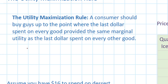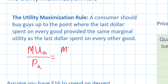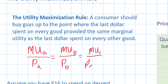There's a simple way of calculating this. We can say that the marginal utility of good A divided by the price of good A should equal the marginal utility of good B divided by the price of good B, which should equal the marginal utility of good C divided by the price of good C, and so on.